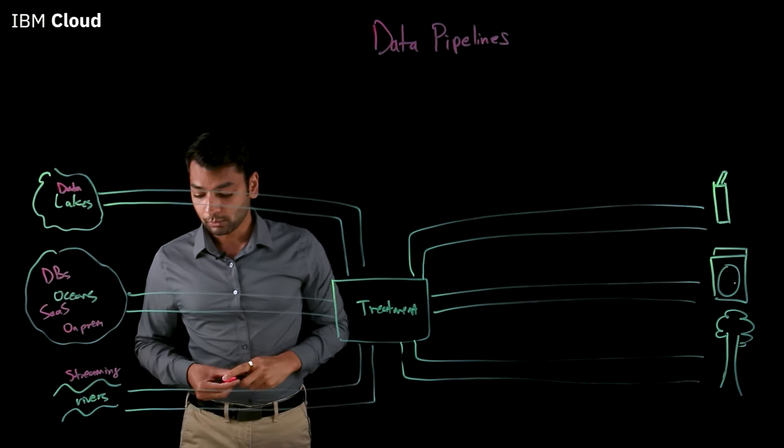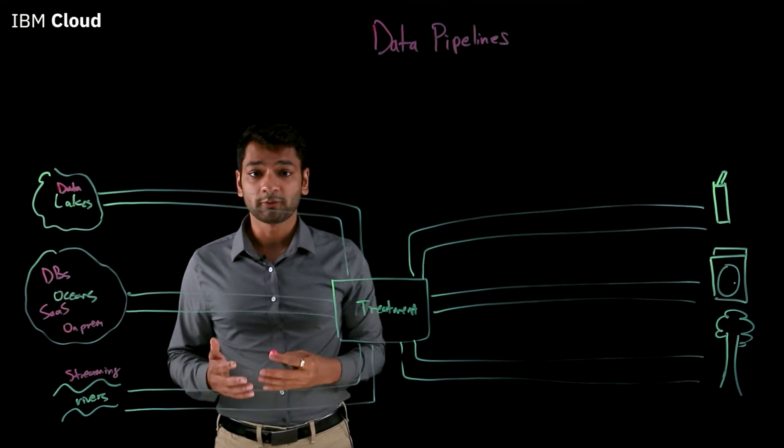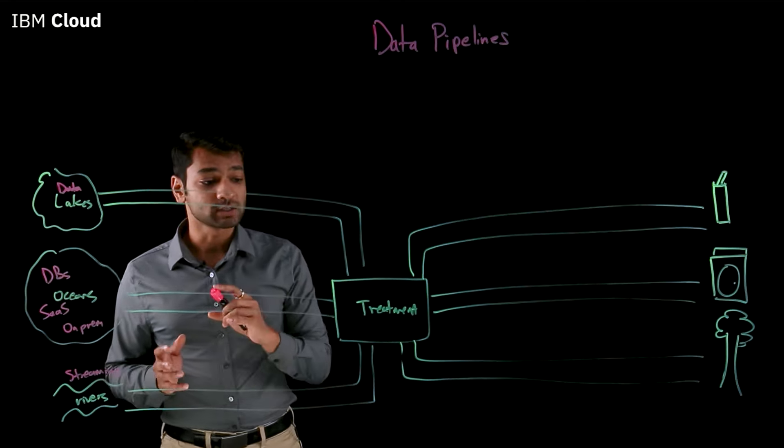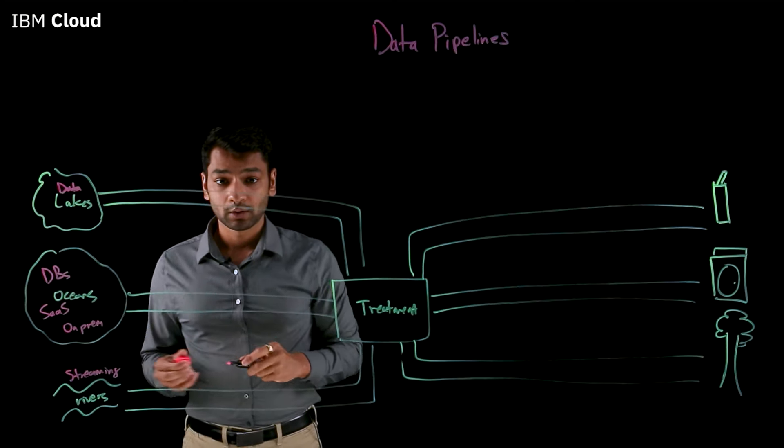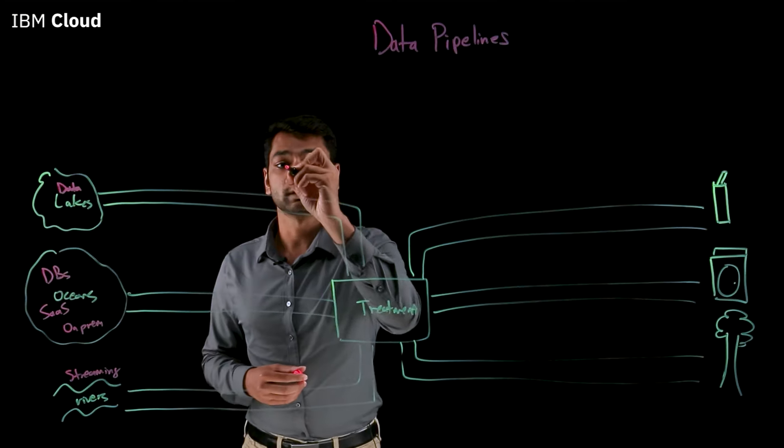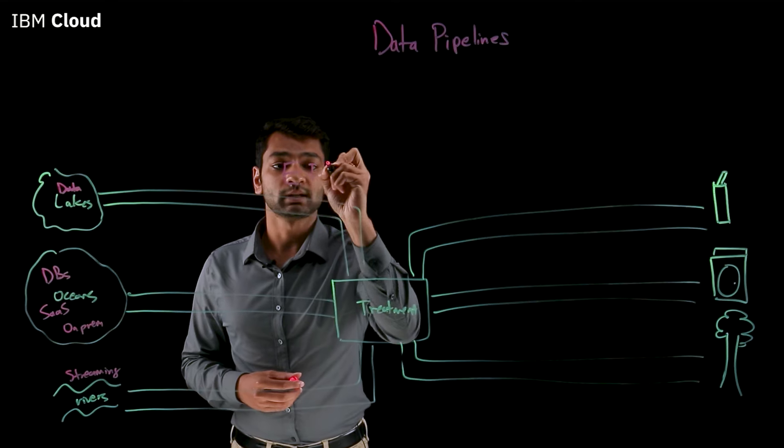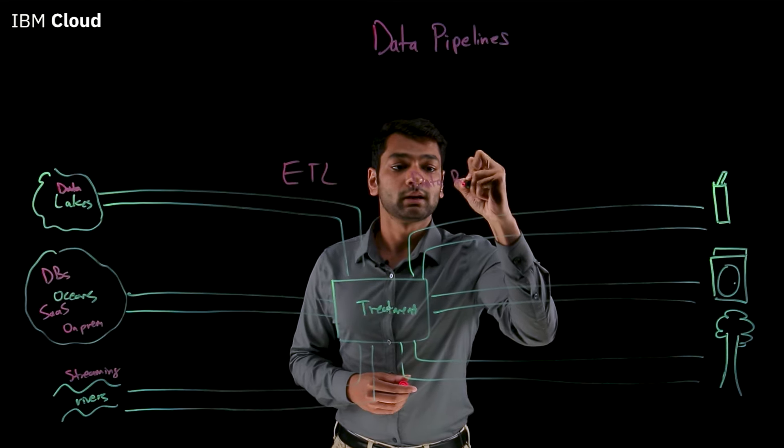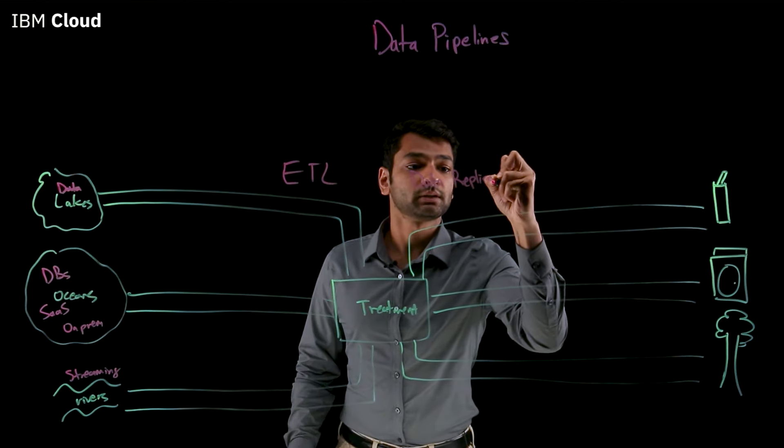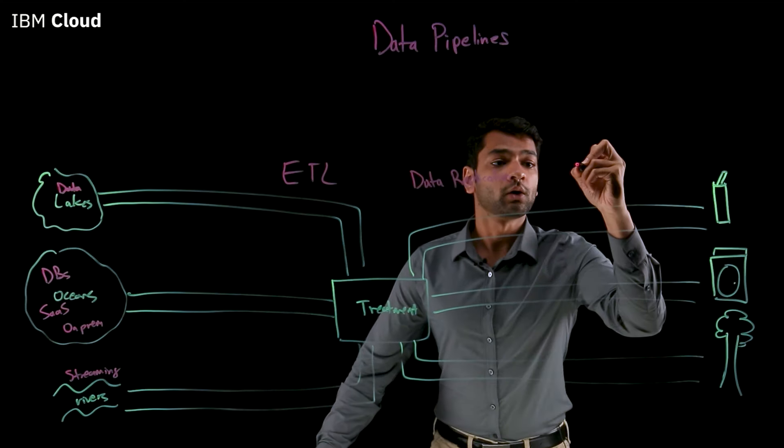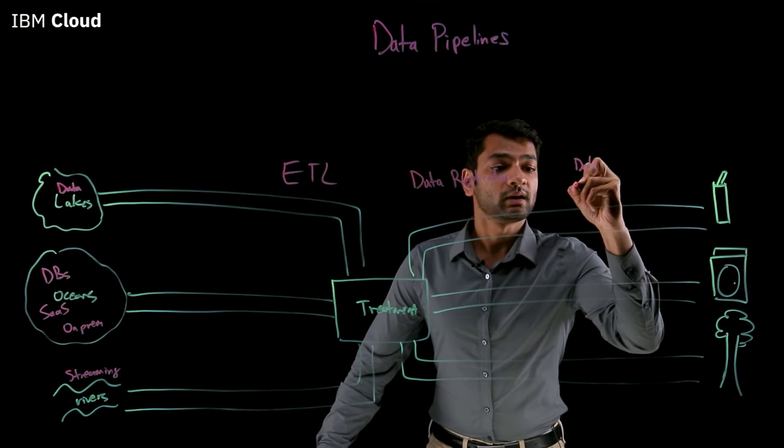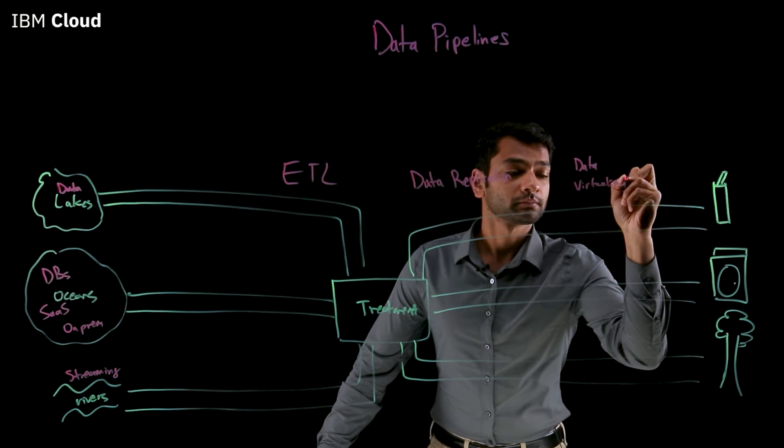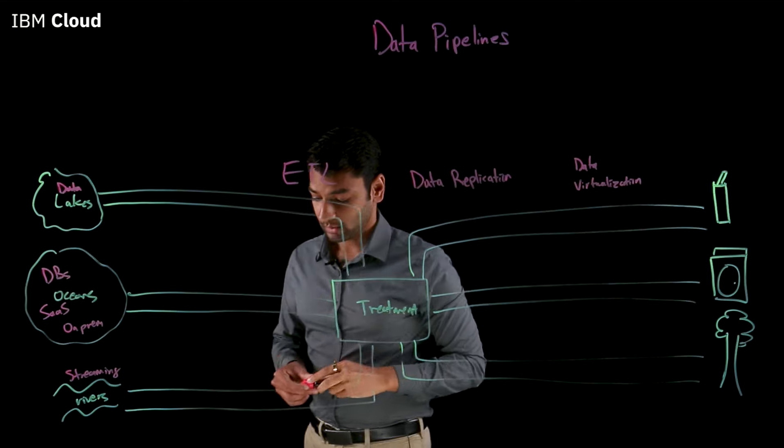Okay, so when we talk about data pipelines, we have a few different processes that we can use to help us handle the task of transforming and cleaning this data. We can use processes like ETL, we can use data replication, and we can also use something called data virtualization.